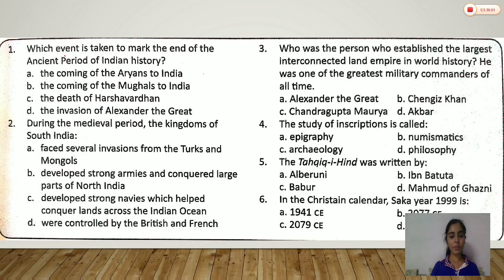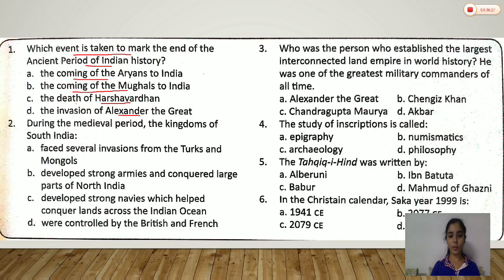The first question says: which event is taken to mark the end of the ancient period of Indian history? Options are: the coming of the Aryans to India, the coming of the Mughals to India, the death of Harshwardhan, or the invasion of Alexander the Great. From the reading of the chapter, we know that the ancient period ended with the death of Harshwardhan and the medieval period started.